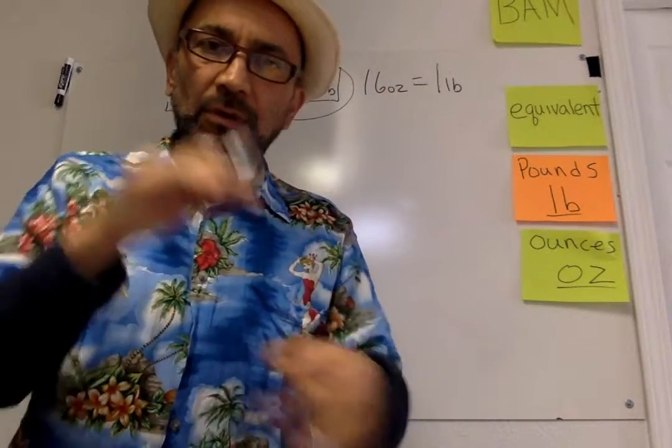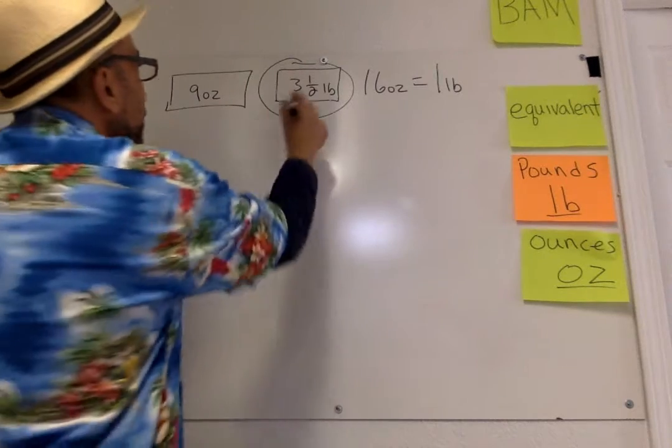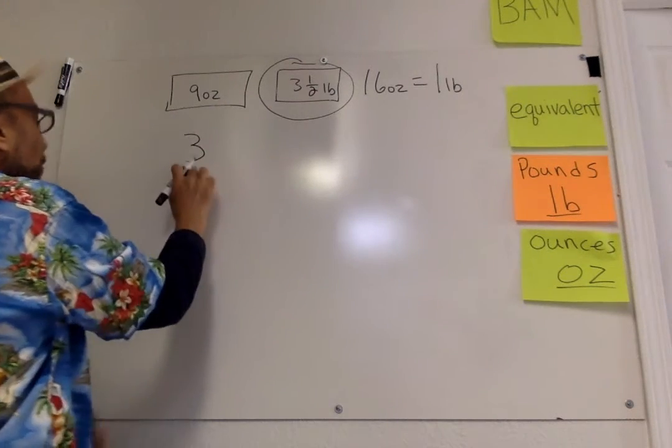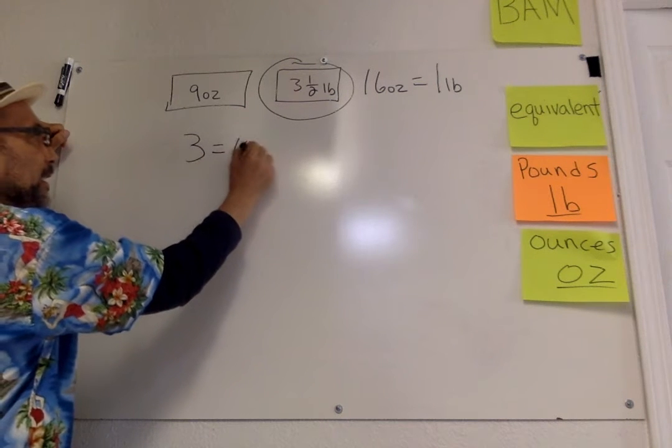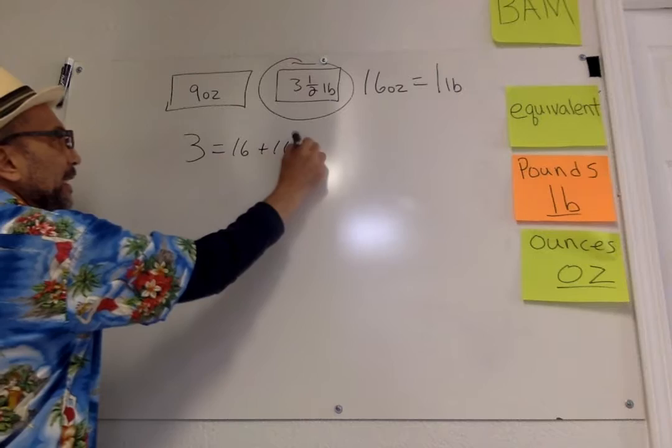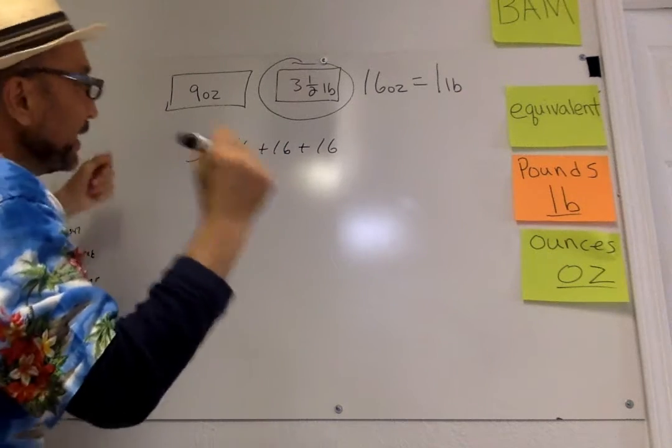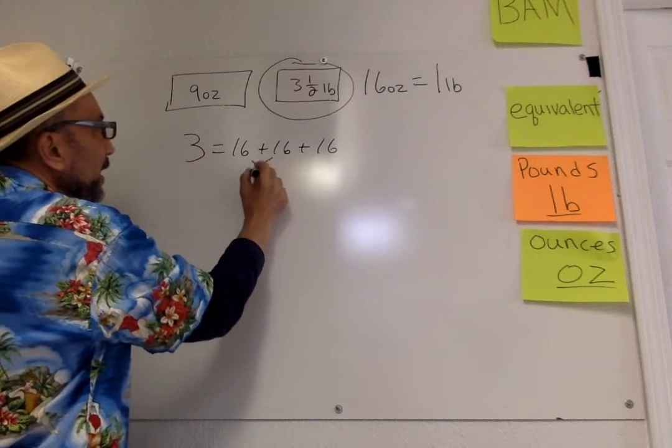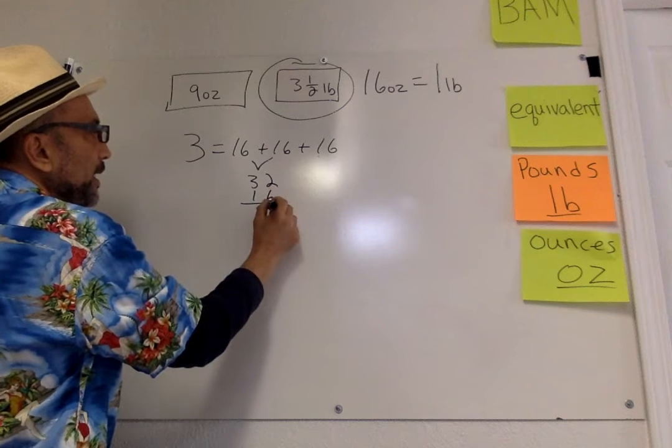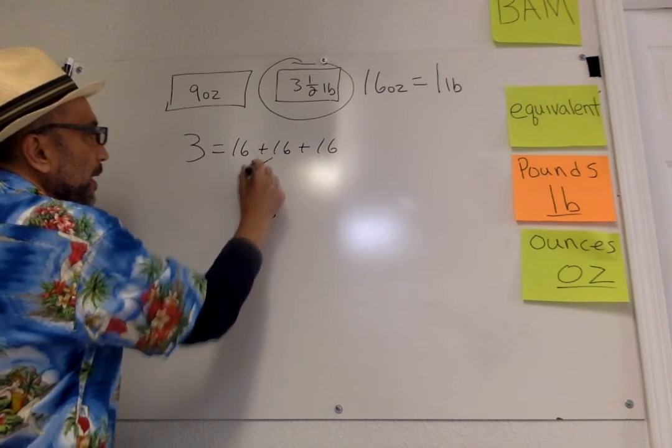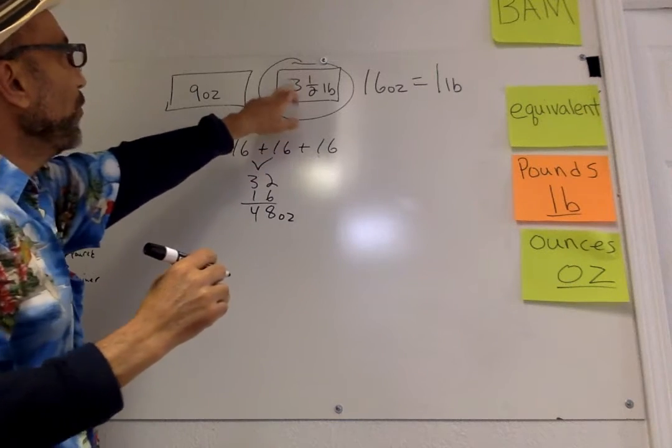Well, you know how to subtract. So what you do is we're going to change this 3.5 pounds. So 3 pounds equals 16 plus 16 plus 16, or 3 times 16. We know that 16 plus 16 is 32, plus 16 more is going to be 48. 48 ounces is 3 pounds.